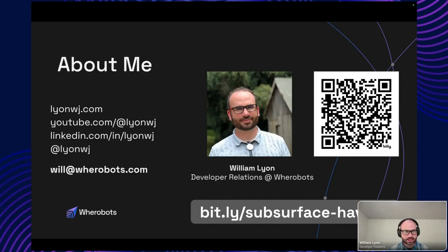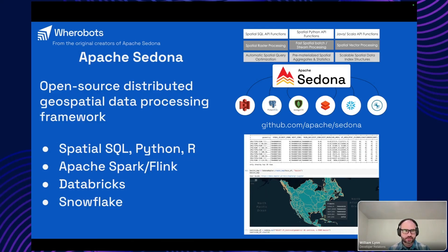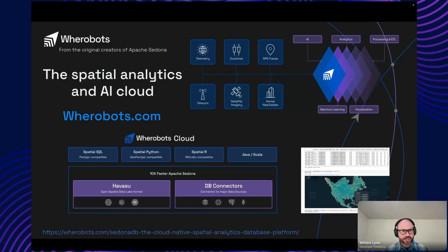I'll have the link again at the end if you miss it here. Werobots was founded by the original creators of the open source Apache Sedona project. Apache Sedona is a project that extends the functionality of distributed compute frameworks like Apache Spark, Flink, or Snowflake to add geospatial functionality — adding geospatial types and optimizations for really large scale geospatial data processing. At Werobots, we're building the spatial analytics and AI cloud on top of Apache Sedona, managing the cluster and adding more cloud-native features for working with large-scale spatial data.